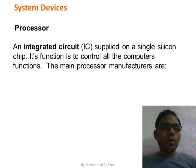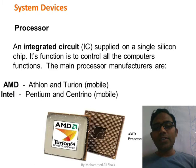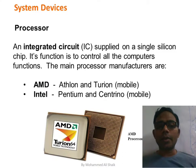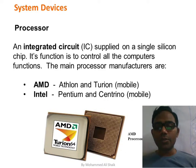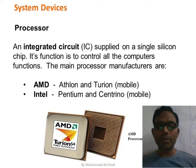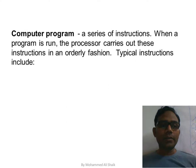A processor is an integrated circuit supplied on a single silicon chip. Its function is to control all computer functions. The main processor manufacturers are AMD and Intel. For AMD, Athlon is for desktop and Turion is for mobile. For Intel, Pentium is for desktop and Centrino is for mobile.